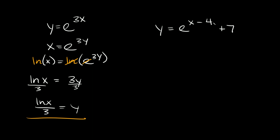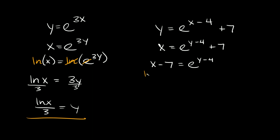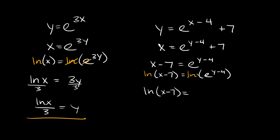Last one: y is equal to e raised to the x minus 4 plus 7. First flip the variables and get rid of the 7, so x minus 7 is equal to e raised to the y minus 4. To get rid of the e, take the natural log of both sides: natural log of x minus 7 is equal to the natural log of e raised to the y minus 4. These cancel out, leaving natural log of x minus 7 equal to y minus 4. Add 4 to both sides: y is equal to the natural log of x minus 7 plus 4.